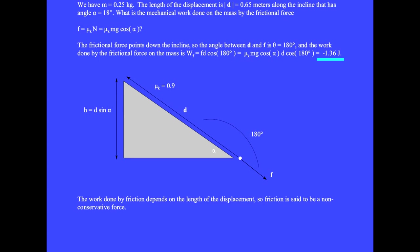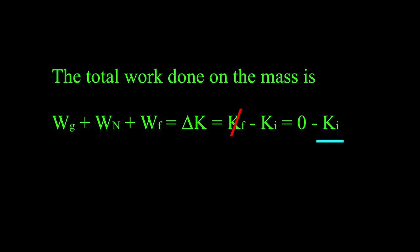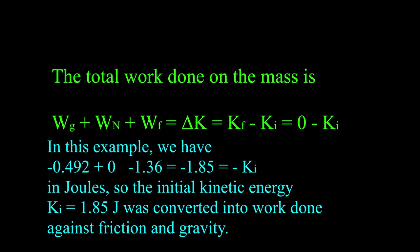The work done by friction depends on the length of the displacement, so friction is a non-conservative force. The total work done on the mass equals work by gravity plus work by the normal force plus work by friction, which equals the change in kinetic energy. Since the final kinetic energy is zero (the mass stops), we have minus 0.492 plus 0 minus 1.36 equals minus 1.85 joules equals minus Ki. So the initial kinetic energy of 1.85 joules was converted into work done against friction and gravity.